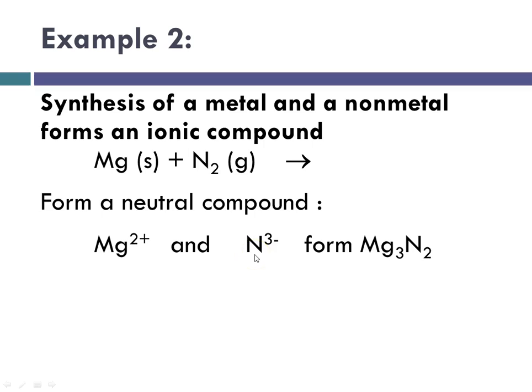And nitrogen forms nitride. Nitrogen is a group 5 metal, 5 minus 8 is negative 3. And the resulting compound with the criss-cross method would be Mg3N2.